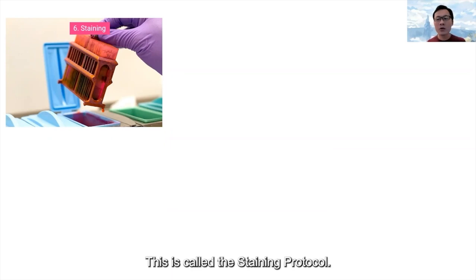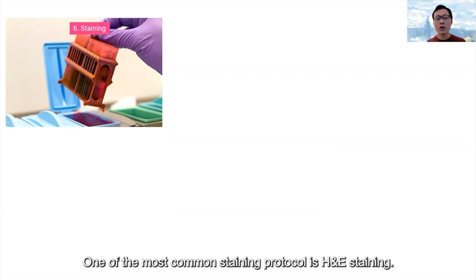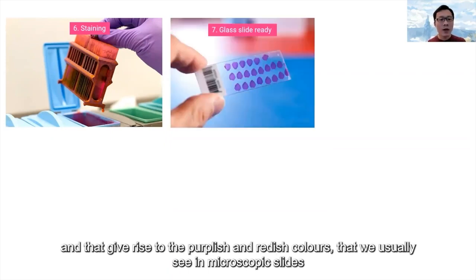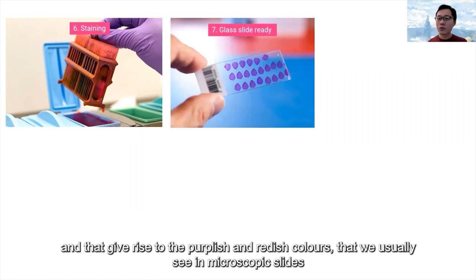A sectioning machine cuts thin slices from the paraffin block, and the doctor picks the best cross-section and mounts them on a glass slide. Because human tissues normally don't have any colors or pigments, they are basically colorless. Therefore, in order to reveal the cell structure, we use different chemicals to stain some colors on the cells. This is called a staining protocol.